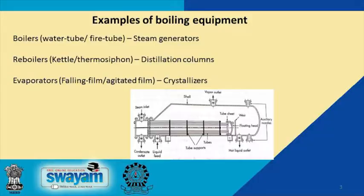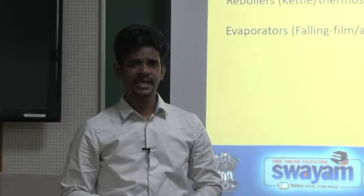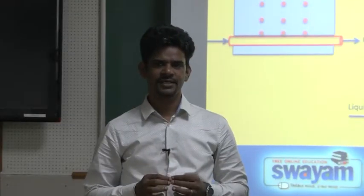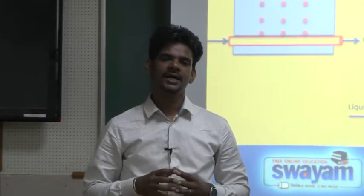Here is an example of a kettle type reboiler used in distillation columns. As far as boiling is concerned, there are different ways to conduct this experiment. For example, you can provide a hot surface inside a liquid and increase the temperature beyond the saturation temperature so that boiling can happen. You could have a metal wire, apply a potential across it, and by resistive heating provide a hot surface on which liquid can boil.